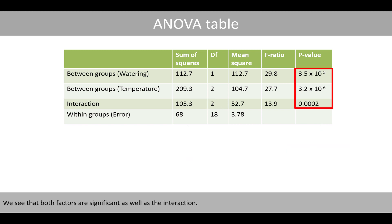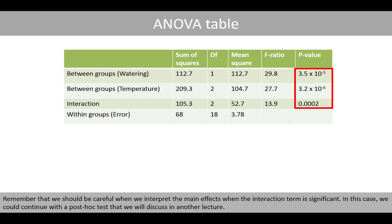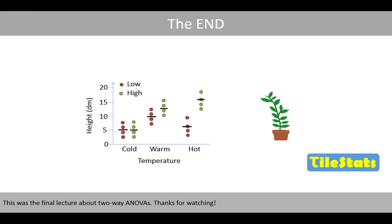We see that both factors are significant, as well as the interaction. We could therefore conclude that there is an interaction between the two factors, which means that the effect of watering is dependent on the temperature. Remember that we should be careful when we interpret the main effects when the interaction term is significant. In this case, we could continue with a post-hoc test that we will discuss in another lecture. This was the final lecture about two-way ANOVAs. Thanks for watching!